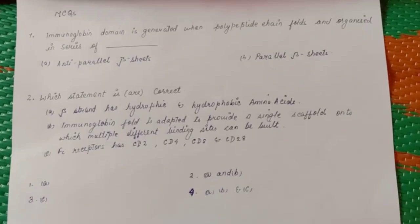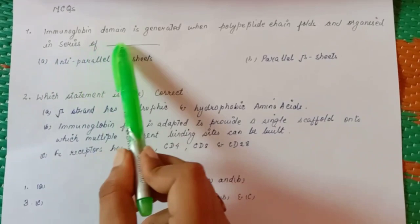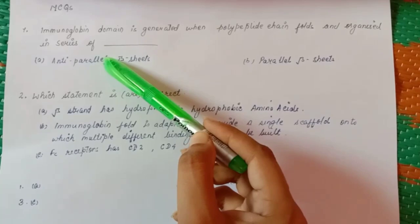Now we have two questions here. The session is going to end with two questions. Immunoglobulin domain is generated when polypeptide chain folds and organizes in series of: A is antiparallel beta sheets, B is parallel beta sheets.